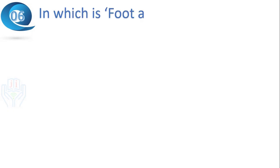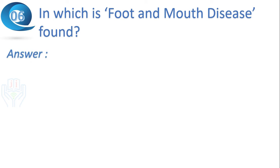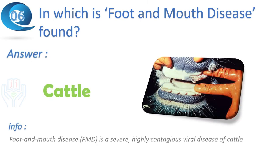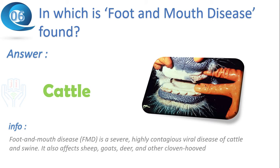Next question: in which animals is foot and mouth disease found? Answer: cattle. It is a severe, highly contagious viral disease of cattle and swine. It also affects sheep, goats, deer and other cloven-hoofed ruminants.